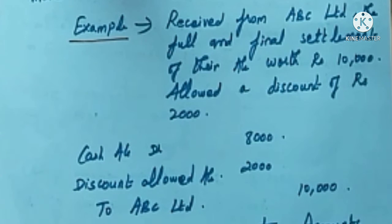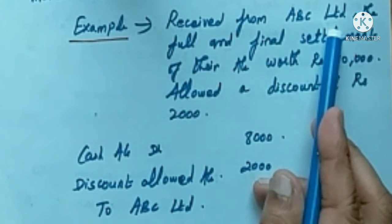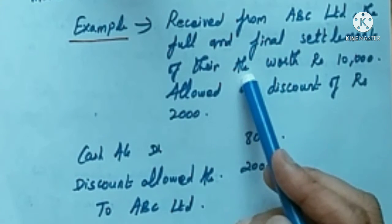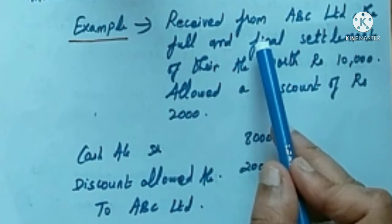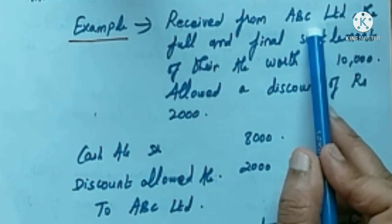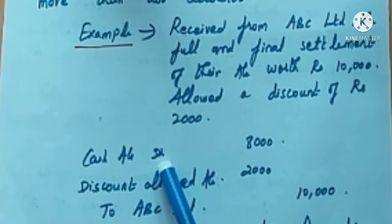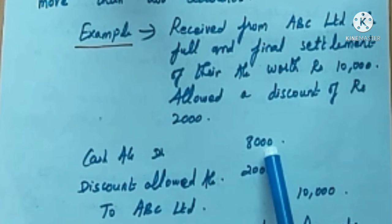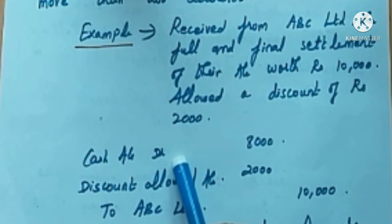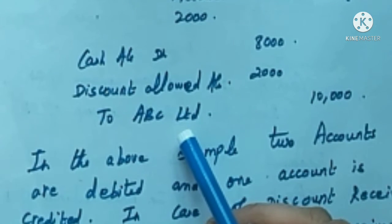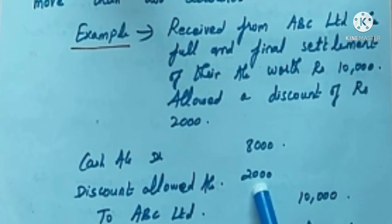In this example: received from ABC Limited the full and final settlement of their account — rupees 10,000 — and allowed a discount of rupees 2,000. When we receive from ABC Limited, cash is coming in, so we debit cash account with rupees 8,000. First, let's understand the entry: cash is coming in, so cash account is debited as per the real account rule — debit what comes in.